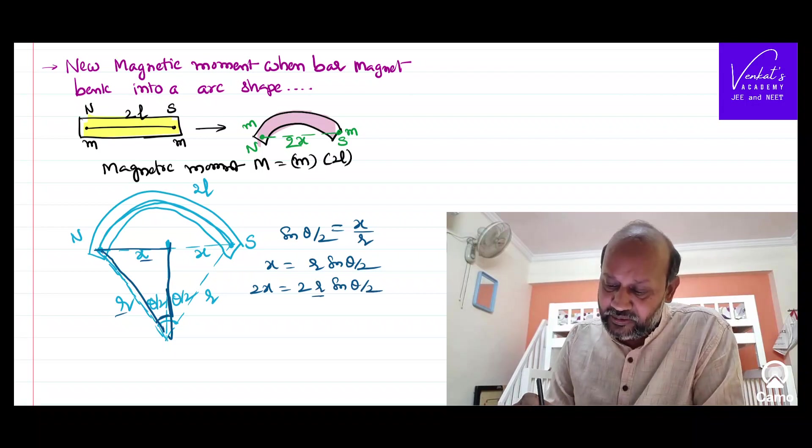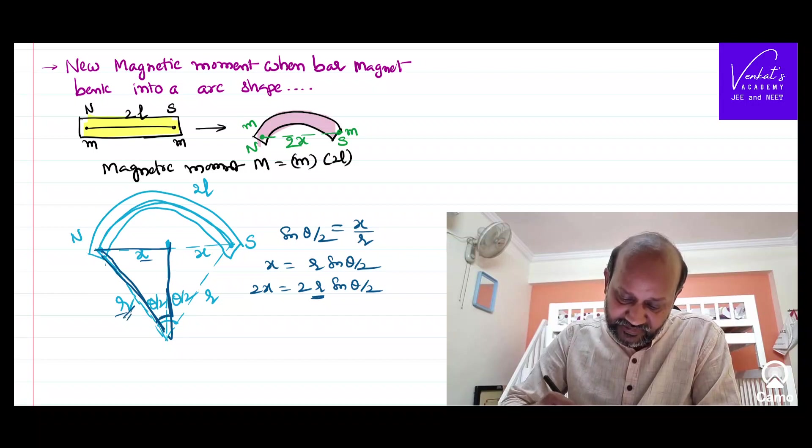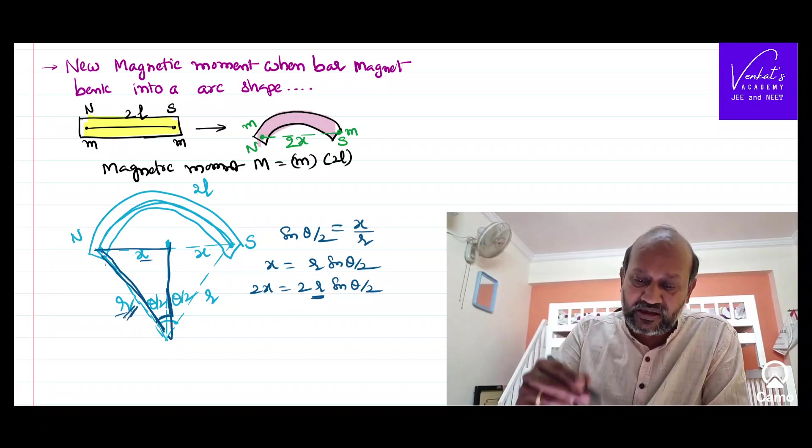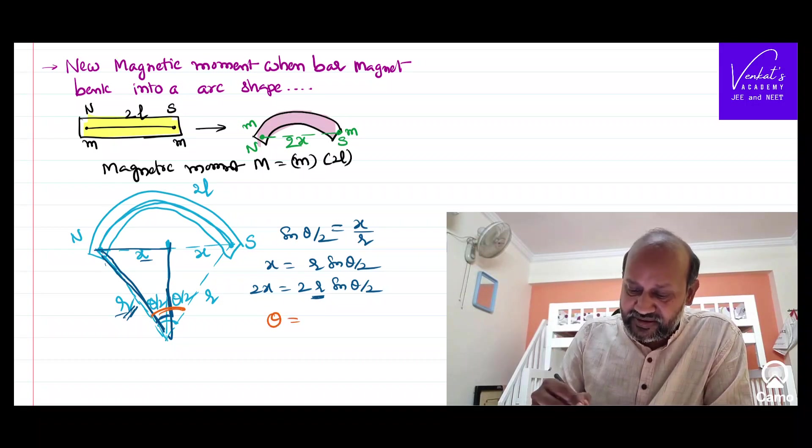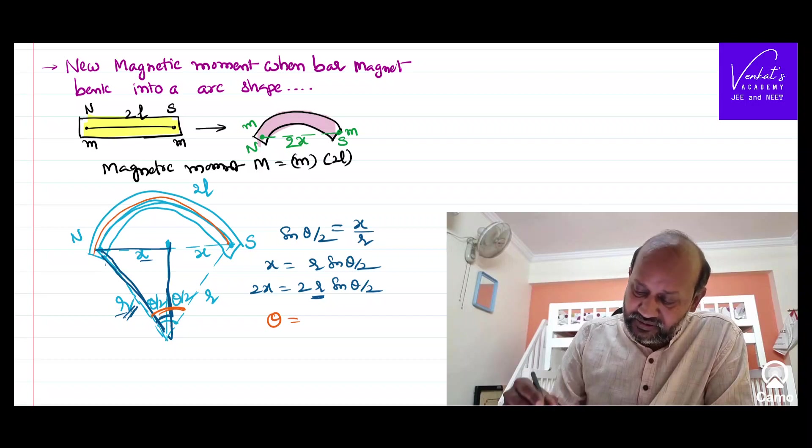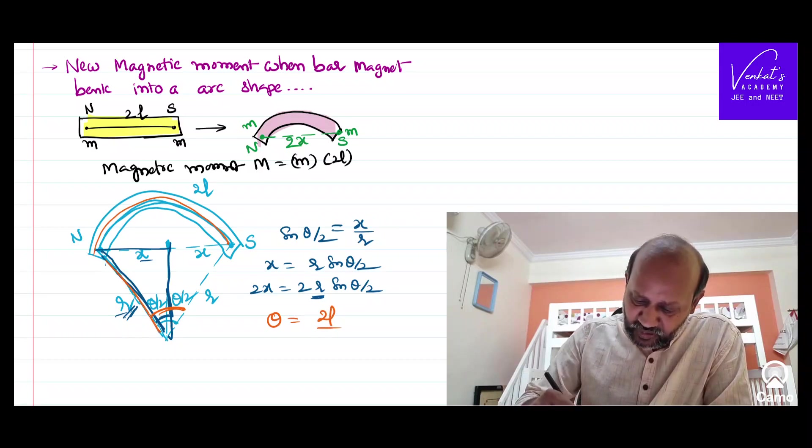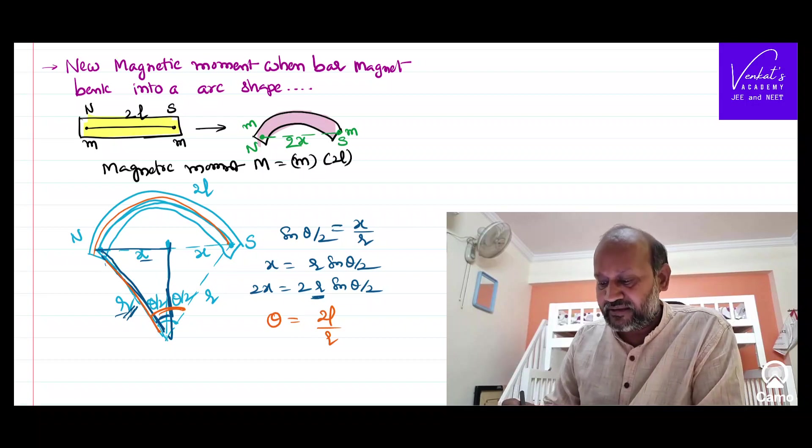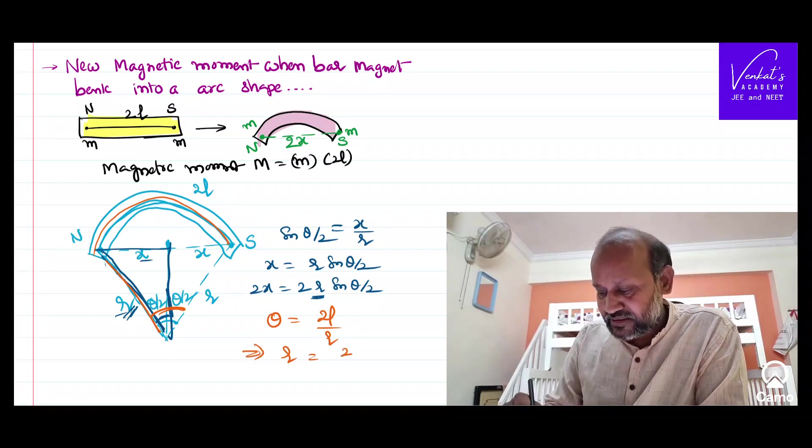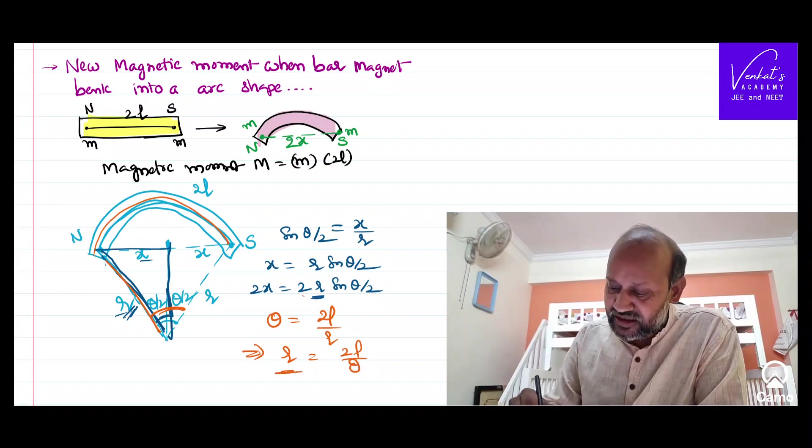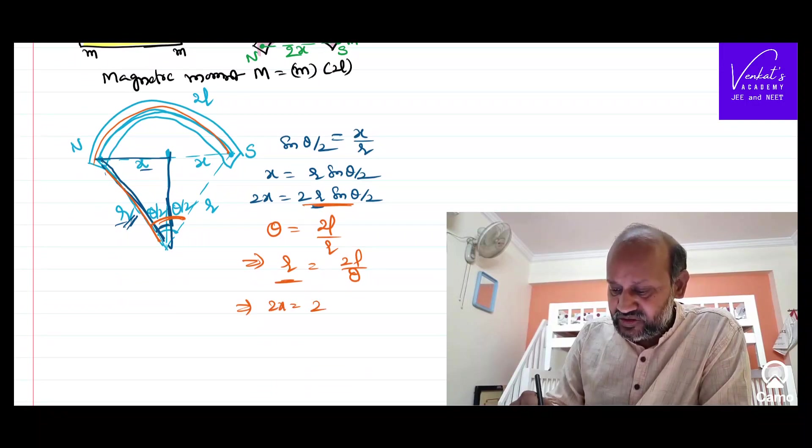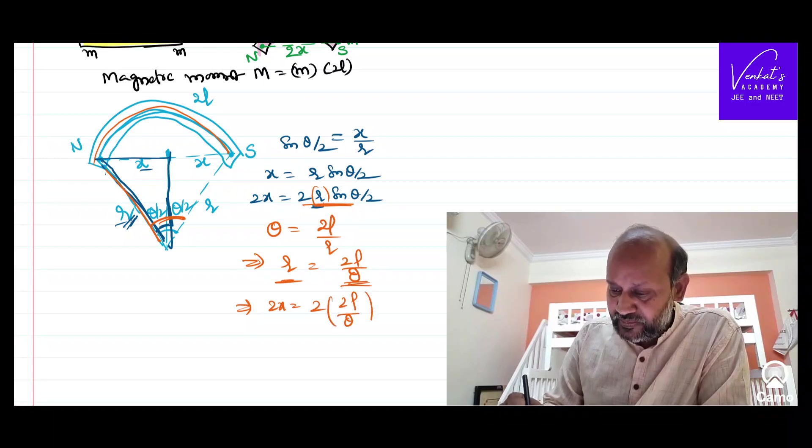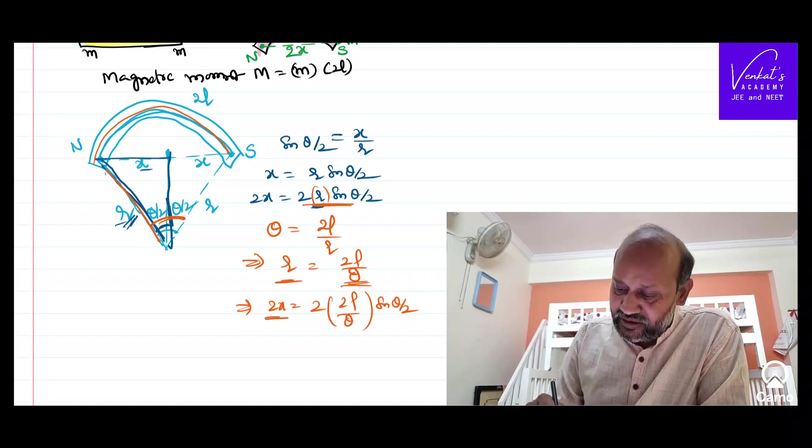But the problem is, I don't know this R also. R is our imaginary term. How do I find out that R? I know this total angle is theta. Angle is defined as arc 2L by radius. That's the core definition of the angle. So now I know the R as 2L by theta. Let's put this R value here. So what happens to our 2x? It implies 2x is 2, in the place of this R, substitute this value: 2L by theta sin theta by 2. I got 2x.